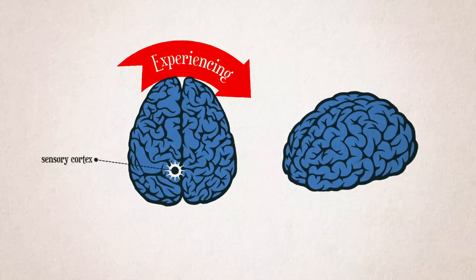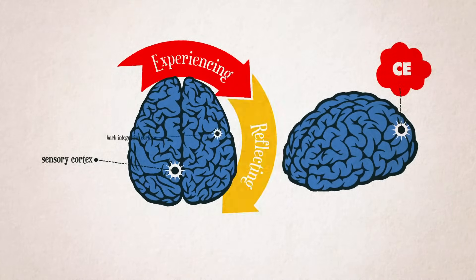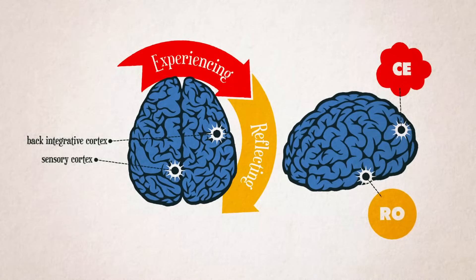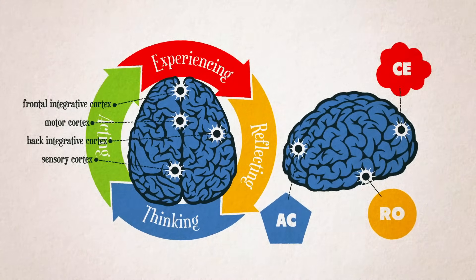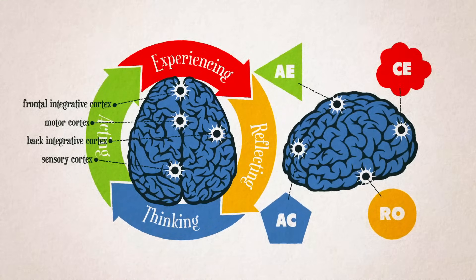While acknowledging the greater complexity of brain functioning, Zull proposed that specific regions of the brain were involved in the modes of a learning cycle. The sensory cortex receives information from the outside world through our concrete experiences. The back integrative cortex creates meaning out of sensory information through our reflective observations. The front integrative cortex helps us think and plan through problems with abstract conceptualization. The motor cortex facilitates action. Action closes the learning cycle and reconnects the processing inside the brain with the world. It generates consequences, experiences that create new experiences that begin the cycle anew.